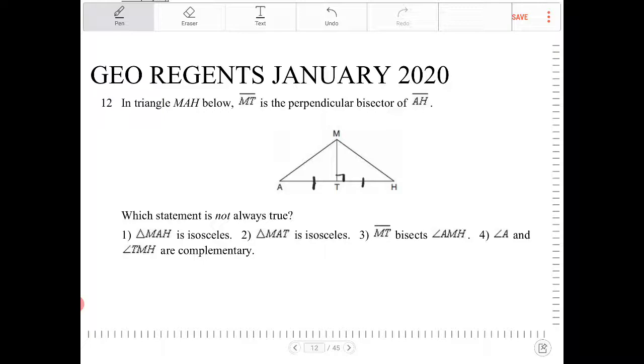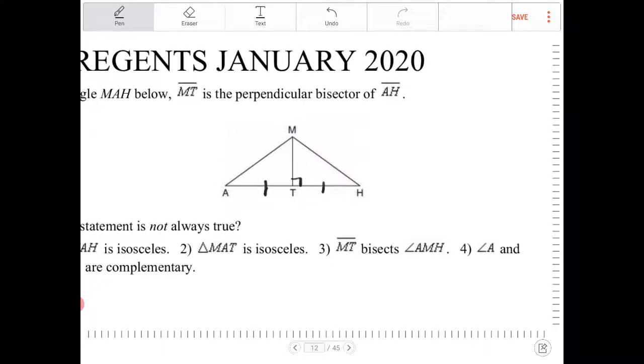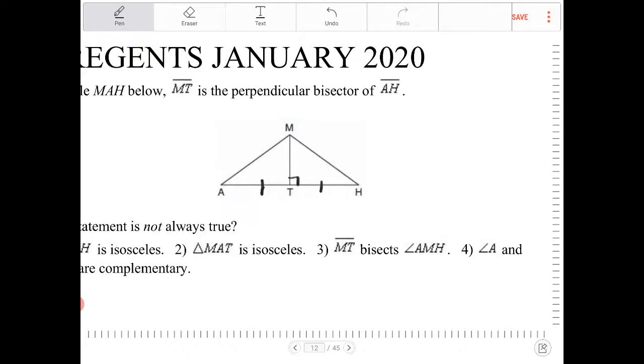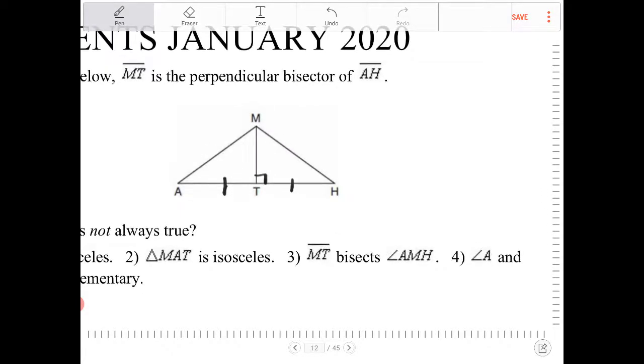Which statement is not always true? Okay, so I'm not going to look at the answer choices there. I'm just going to focus on this diagram that I just labeled. And looking at this right here, I immediately notice that what I have is two right triangles: triangle AMT and triangle HMT.